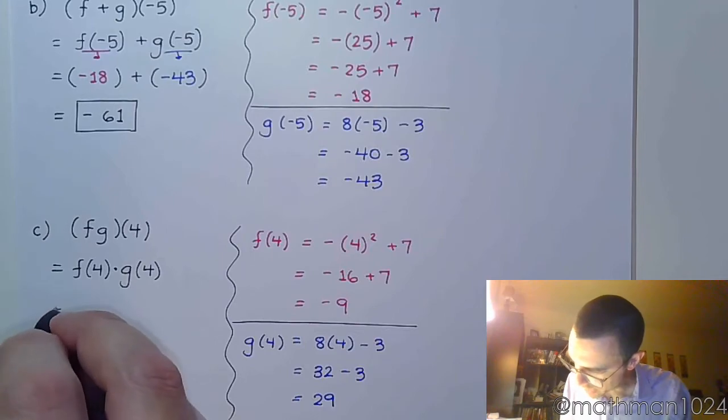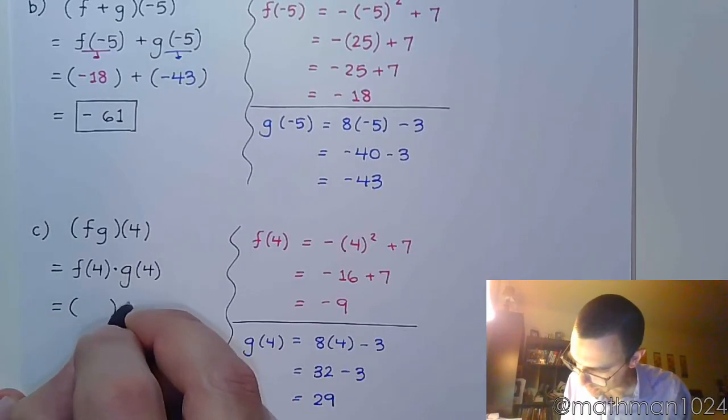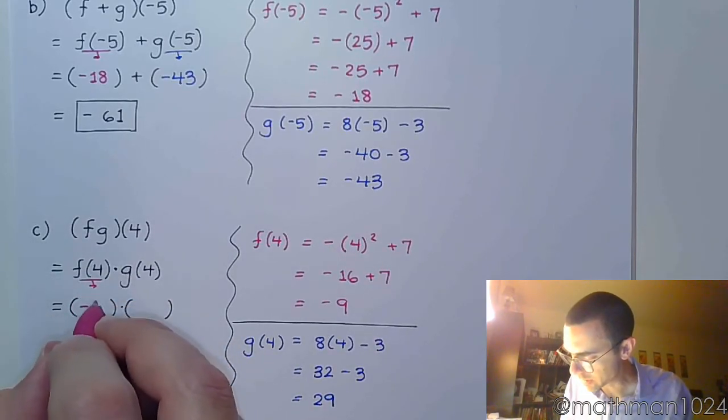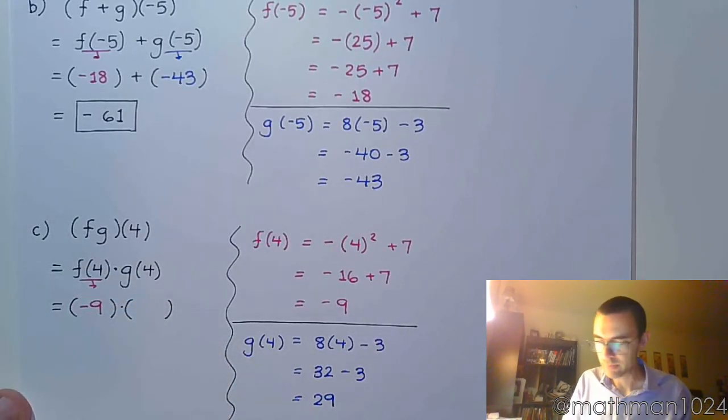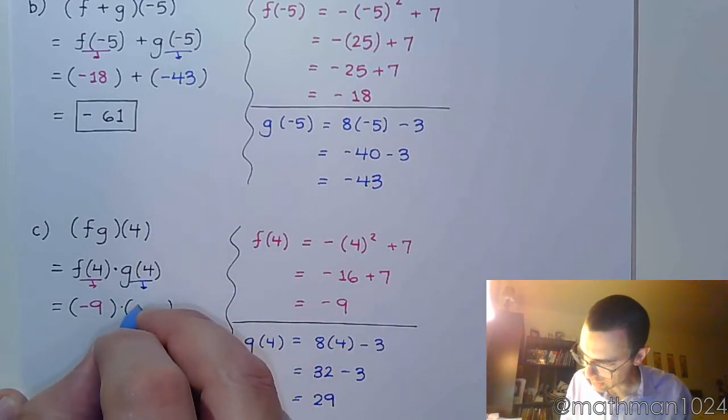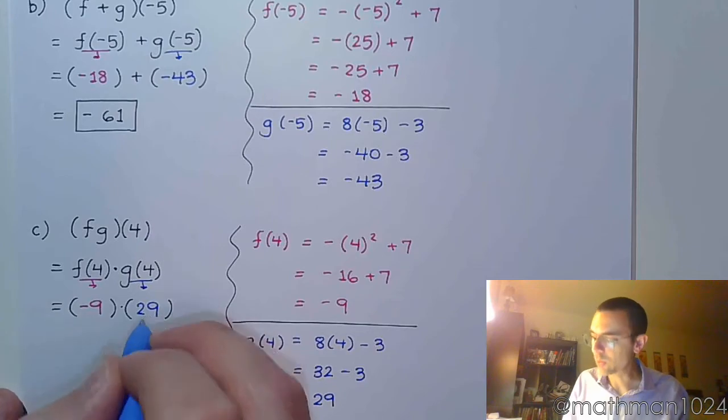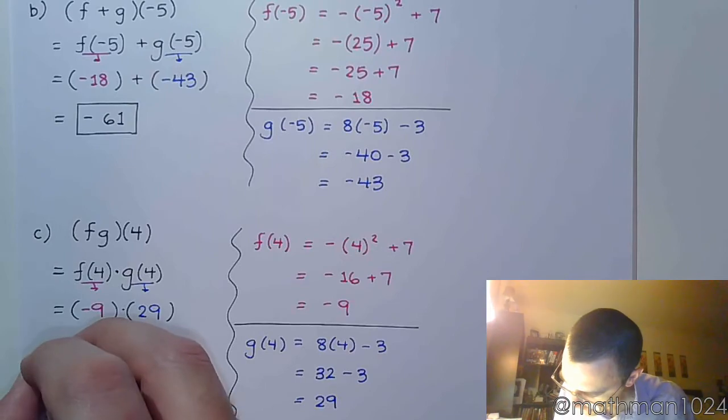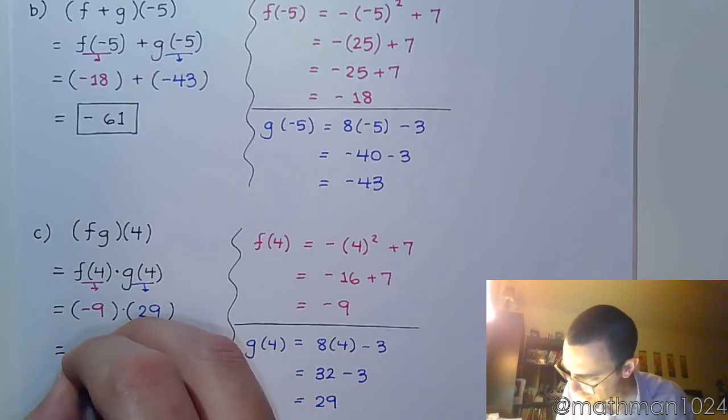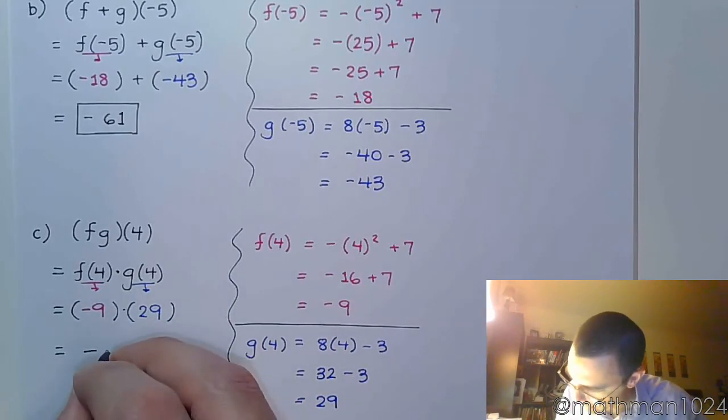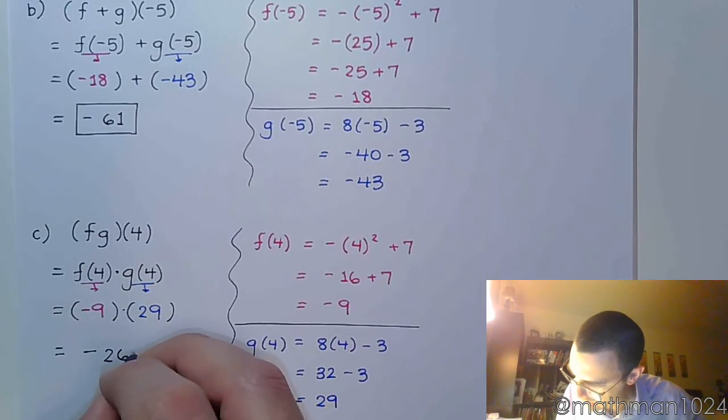So, putting these back into the problem, f of 4 is negative 9, and g of 4 is 29. So, when we do this product, negative times positive is negative. If I do that, I should get negative 261.